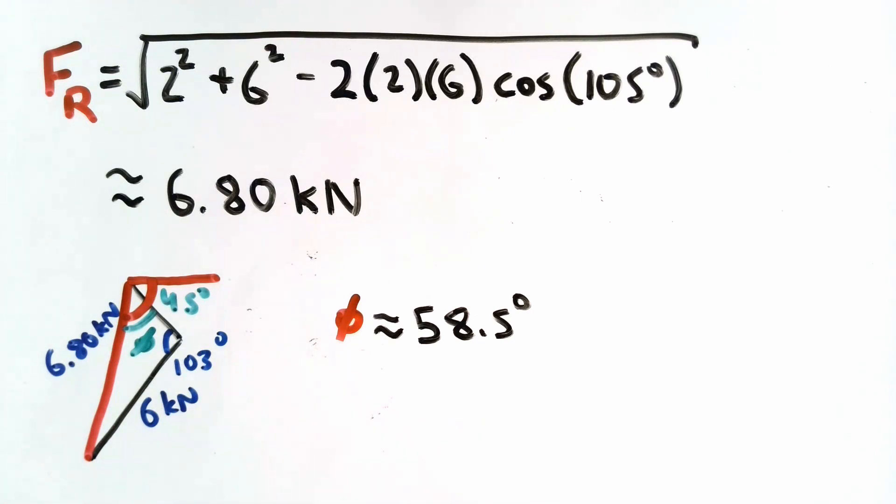So we get an angle of approximately 58.5 degrees. Now is that our final answer? It isn't. Because we really don't want to find phi. What we really want is to find the angle for the resultant force vector measured from the horizontal.